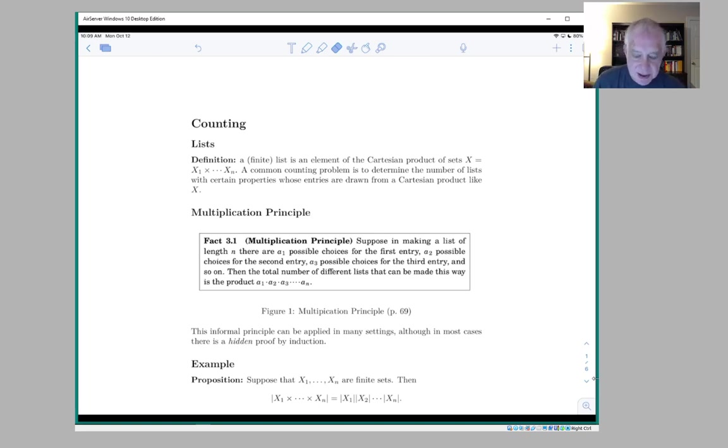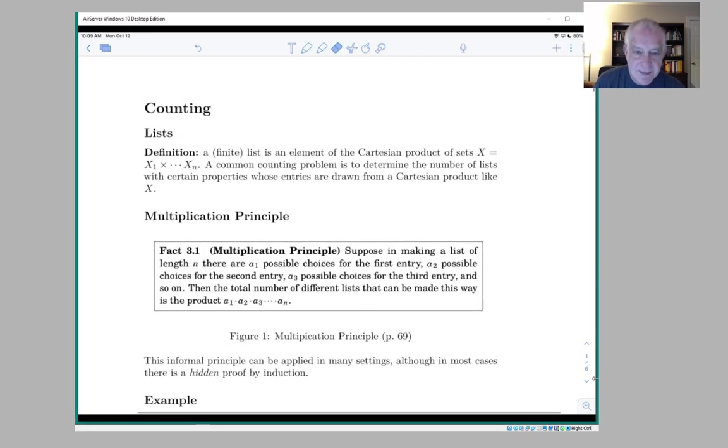So a list, or a finite list anyway, is an element of the Cartesian product of a collection of sets, x1 up through xn. And a common counting problem is to determine the number of lists that you can construct with certain properties where the entries are drawn from a Cartesian product like x. So why do I think of a list as an element of a Cartesian product?